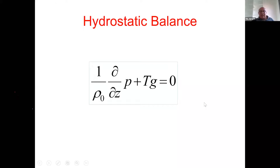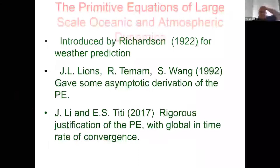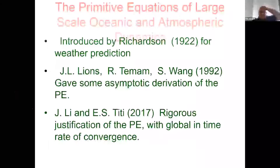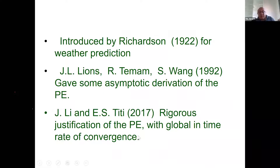The primitive equations replace the vertical momentum equation with hydrostatic balance, keeping horizontal momentum, incompressibility, and the temperature equation. This system was introduced by Richardson in 1922; Lions, Temam, and Wang gave a formal asymptotic derivation. Cao and Titi (2007) gave global existence; Azérad-Guillén and myself with Jim Kelliher (2011) gave rigorous justification with rates of convergence: solutions of scaled Navier-Stokes converge to primitive equations as the aspect ratio goes to zero.